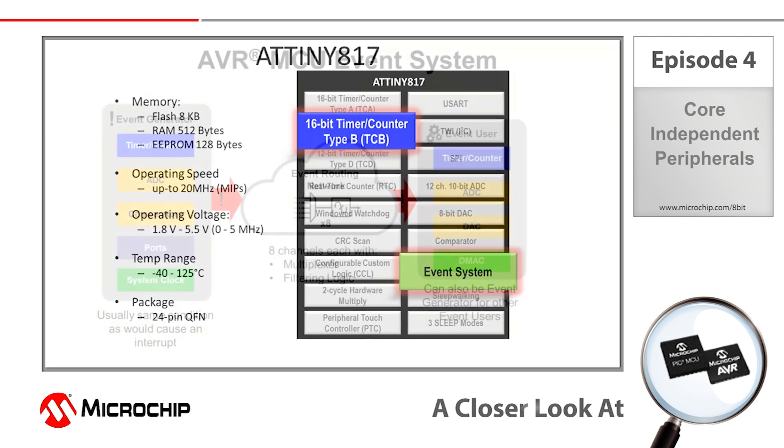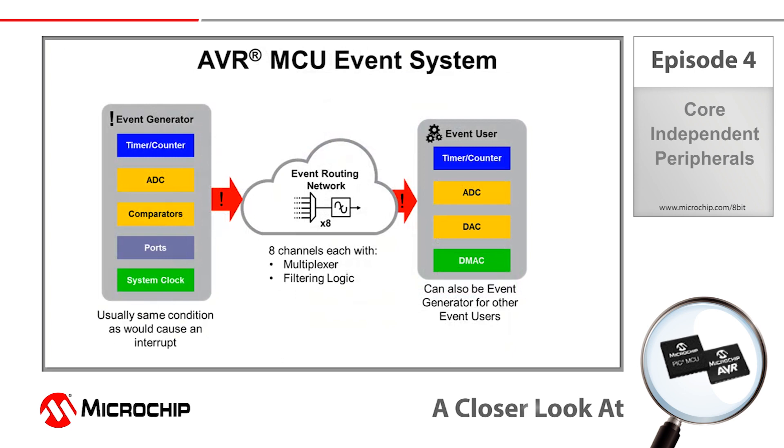The event system peripheral can use an event generated somewhere else on the microcontroller to trigger some other event to occur on the same microcontroller. So for example, if a voltage connected to one of our comparators input pins exceeds a predetermined threshold, the comparator output could be configured to go high. Using the event system, we could then use this comparator output to trigger an analog to digital conversion of a voltage on yet another pin. Or maybe some external signal change like when a push button connected to a port pin is pressed triggers a counter to start counting.